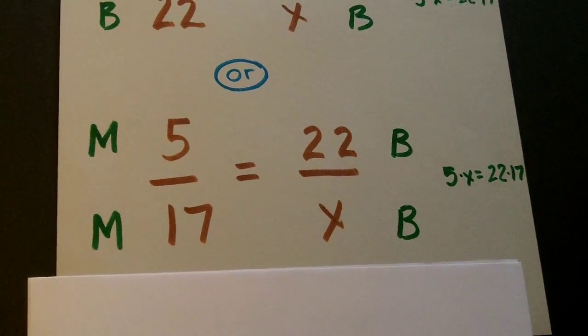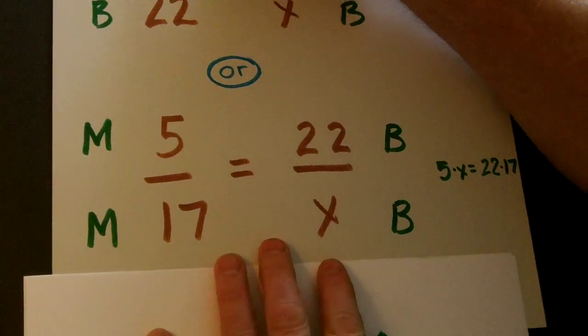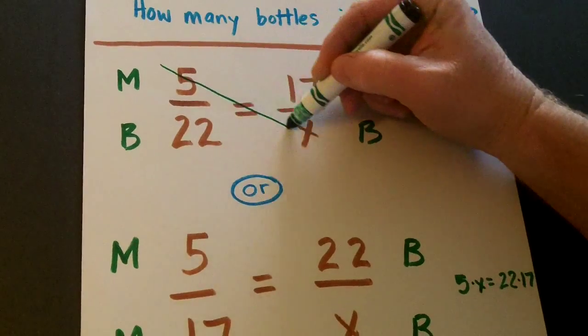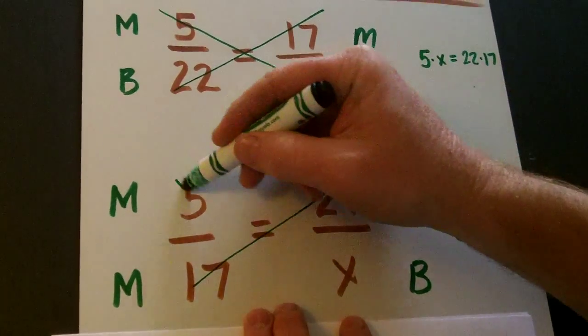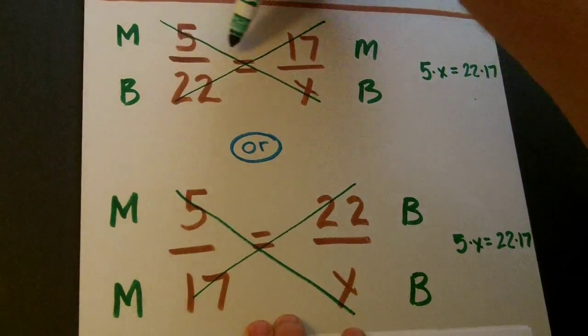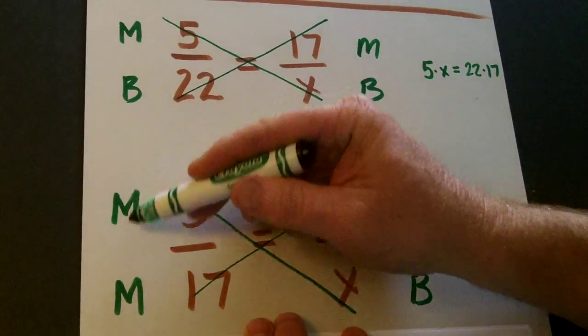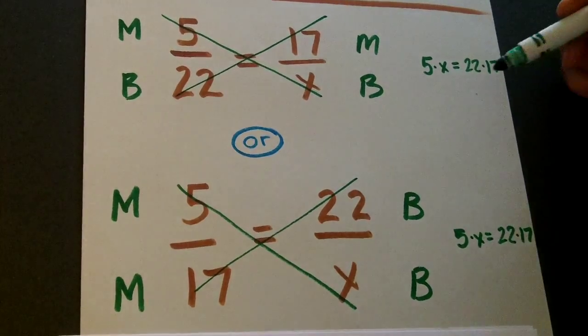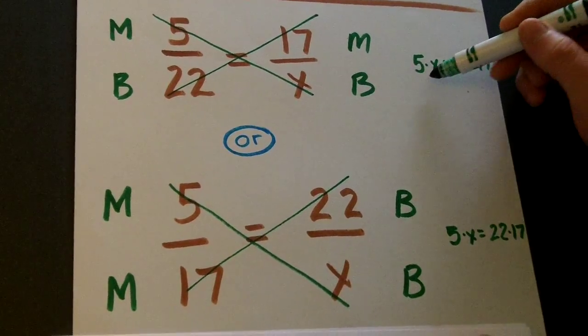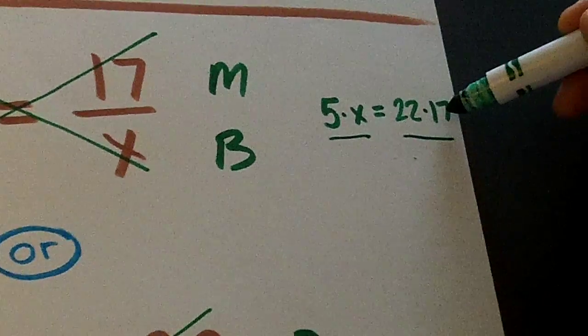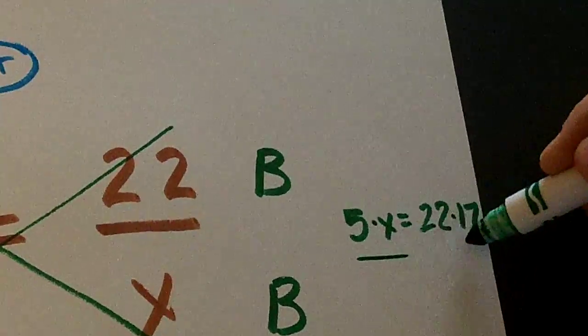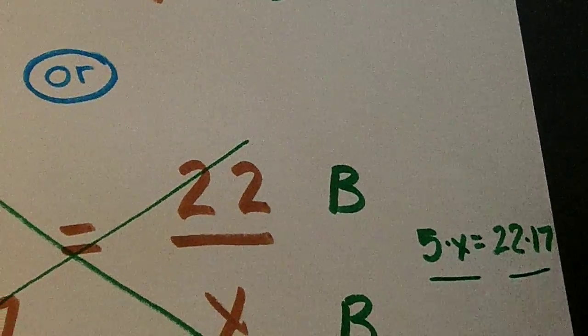Now remember in each of these we can go ahead and cross multiply. So whether you put your categories going across as the same or up and down as the same, you're still going to get the same problem: five times X is equal to 22 times 17.